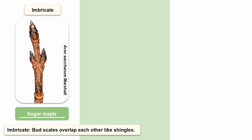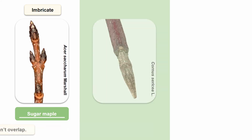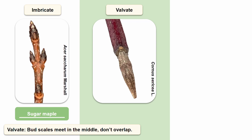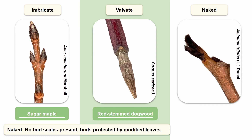The next type of bud scaling pattern is a valvate pattern. Instead of the bud scales overlapping each other like with the imbricate pattern, they meet in the middle. We can see this valvate pattern in red stem dogwoods. Lastly, the final bud scale type is a naked bud. These buds have no bud scales present but can be protected by small modified leaves. An example of a tree species that has a twig with a naked bud would be a pawpaw.